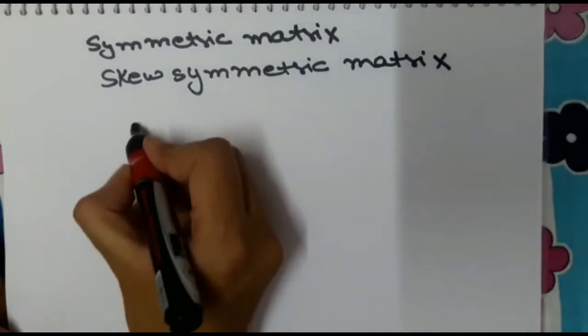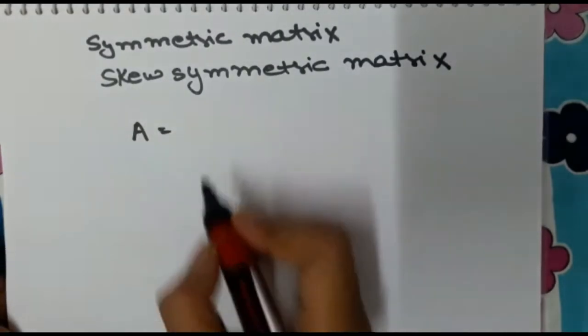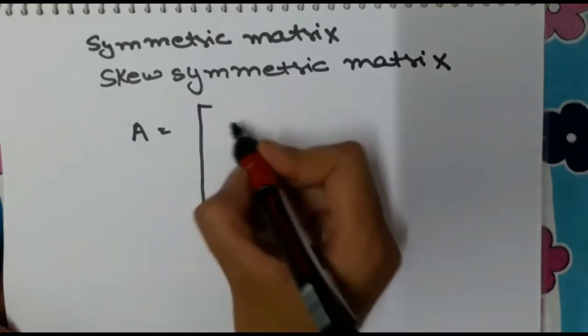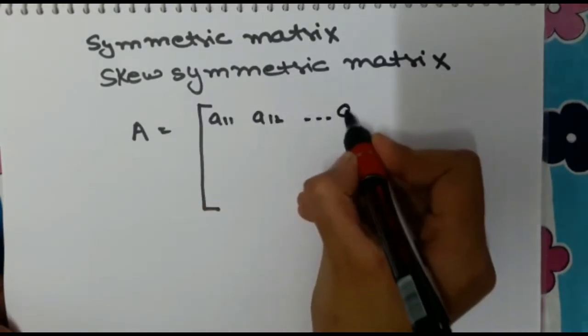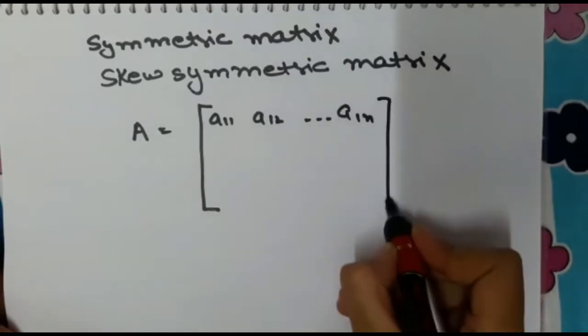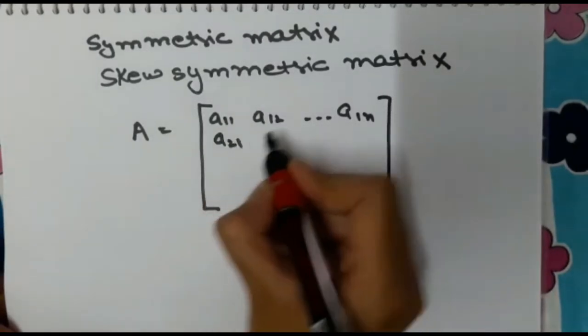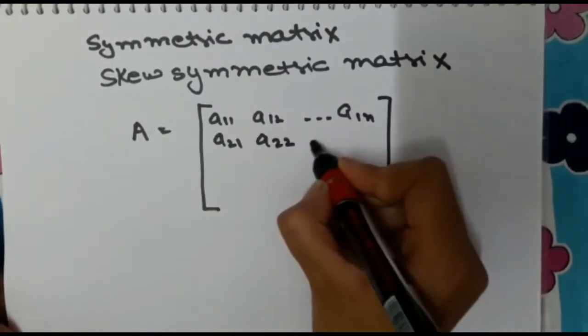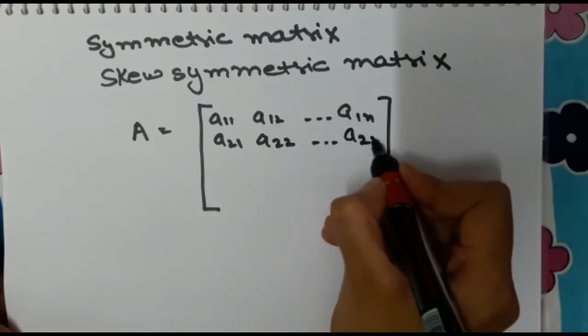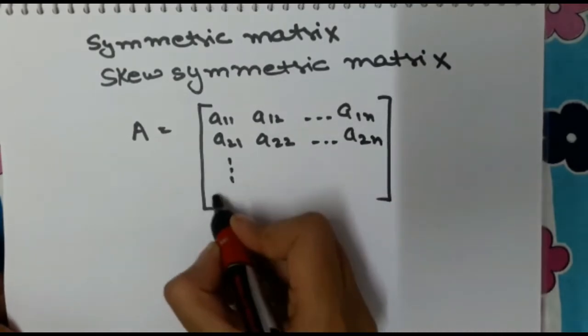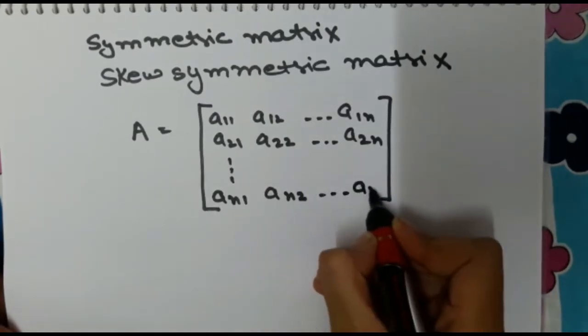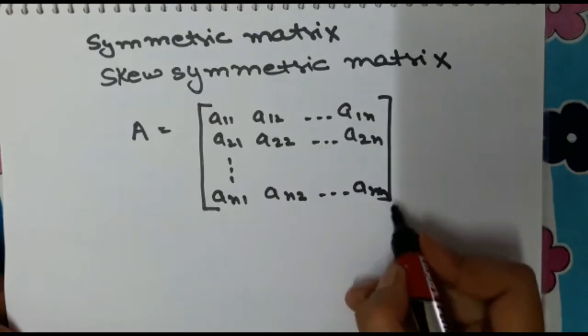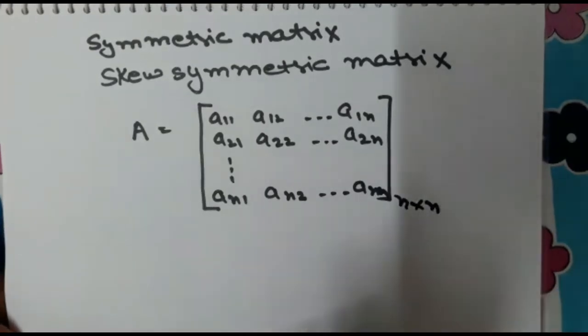First of all, let A be a matrix having the form A11, A12, up to A1n, A21, A22, A2n, down to An1, An2, Ann, having the order n cross n.